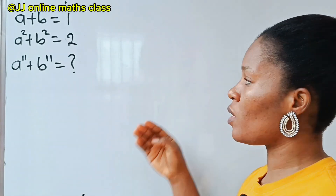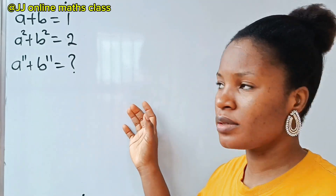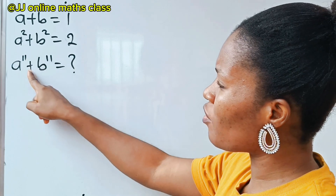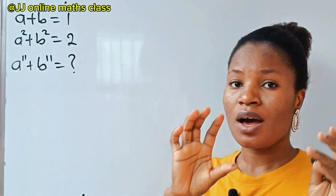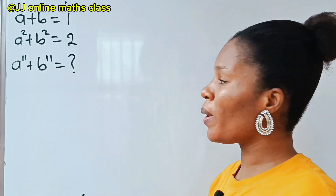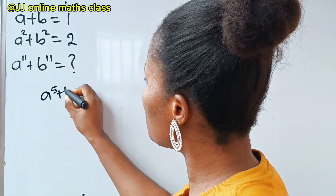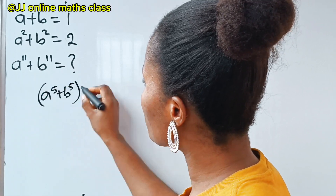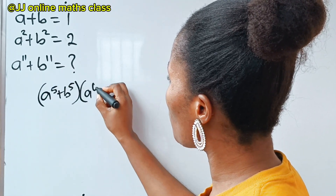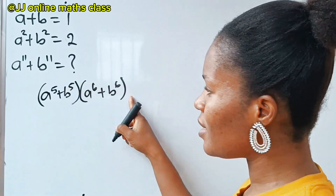Let me show you the easiest way to solve this type of question. We are asked to solve for a to the power of 11 plus b to the power of 11. We need a to the power of 5 plus b to the power of 5 multiplied by a to the power of 6 plus b to the power of 6 to get this.